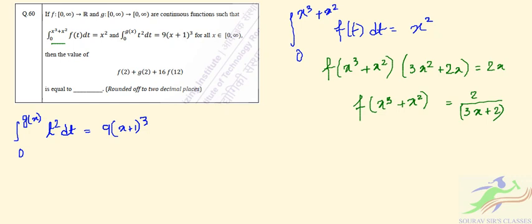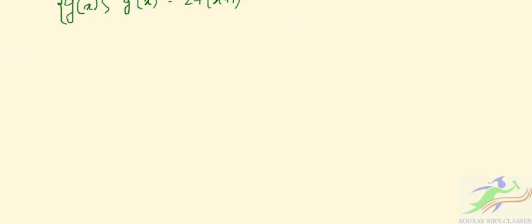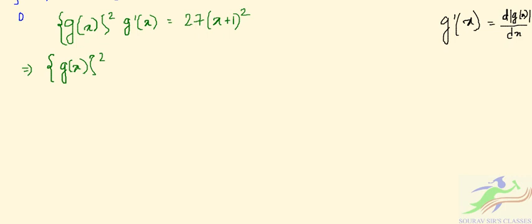Doing the same for g: differentiating the second integral using Leibniz's theorem, we get [g(x)]²·g'(x) = 27(x+1)². This means g(x)²·g'(x) = 27(x+1)². We can rewrite this as g(x)²·dg(x) = 27(x+1)²·dx.